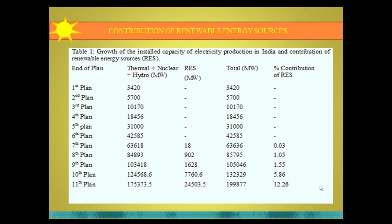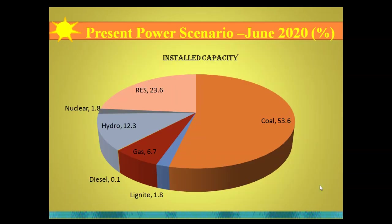We can see from this table the first to 11th five-year plans and how the Indian power sector has grown, with major contributions from thermal, nuclear, and hydro sources. For renewable energy sources, the contribution in the sixth plan was zero, and in the seventh plan it grew to 0.03 percent, with continued growth since then.